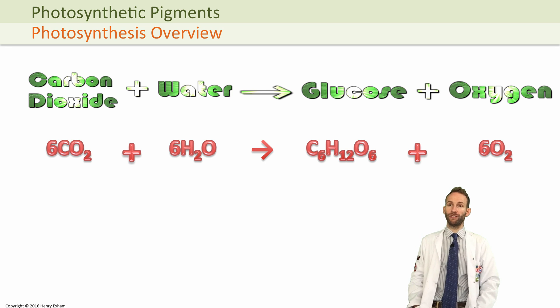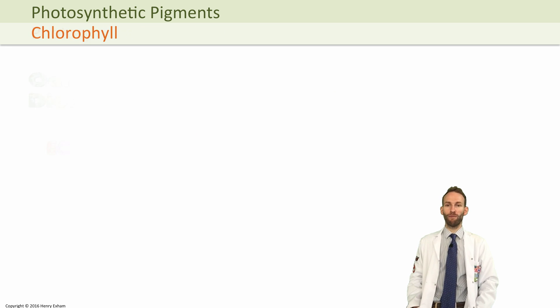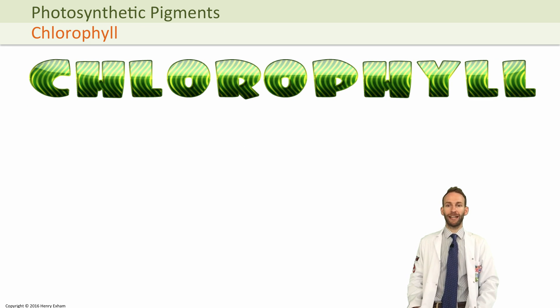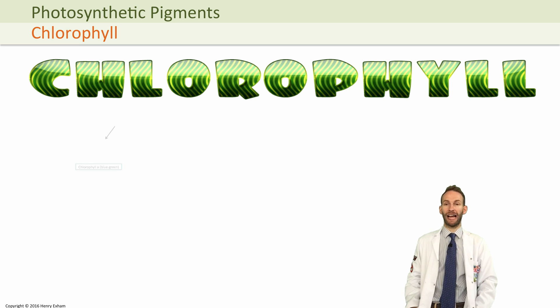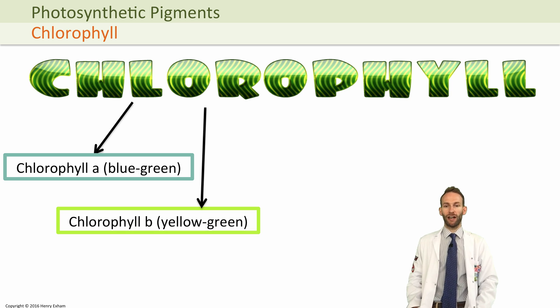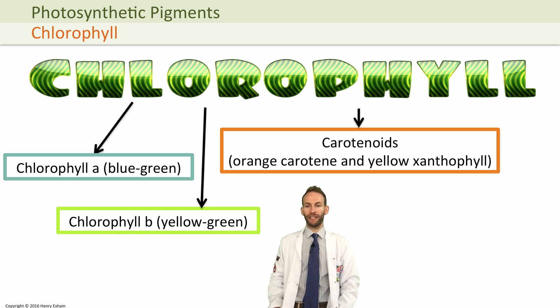But what you probably didn't know is that chlorophyll is actually a mixture of closely related pigments. You can split it up into chlorophyll A, chlorophyll B, a group of pigments called carotenoids, and pheophytin.